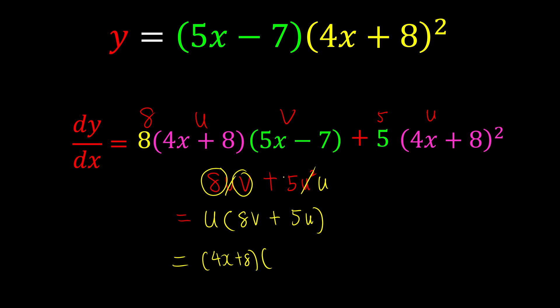And what is 8v? 8v is 40x - 56. How I do this? 8 times 5 is 40. 8 times -7 is -56. Plus 5u—5u is just this one. 5 times 4x is 20x. 5 times 8 is 40.